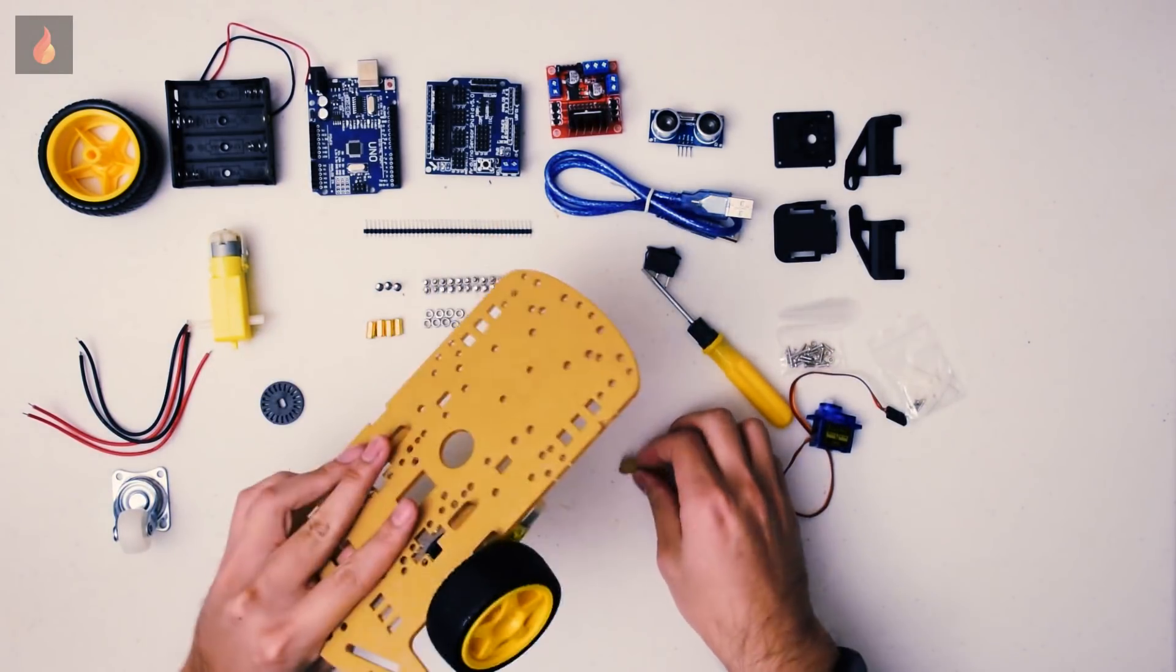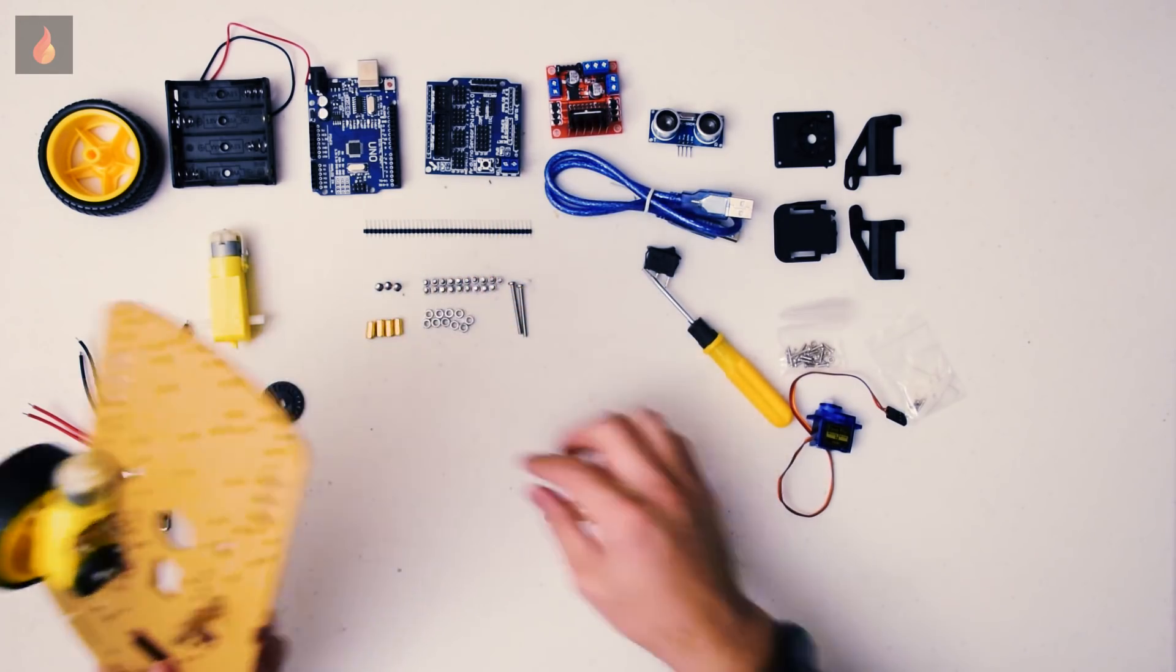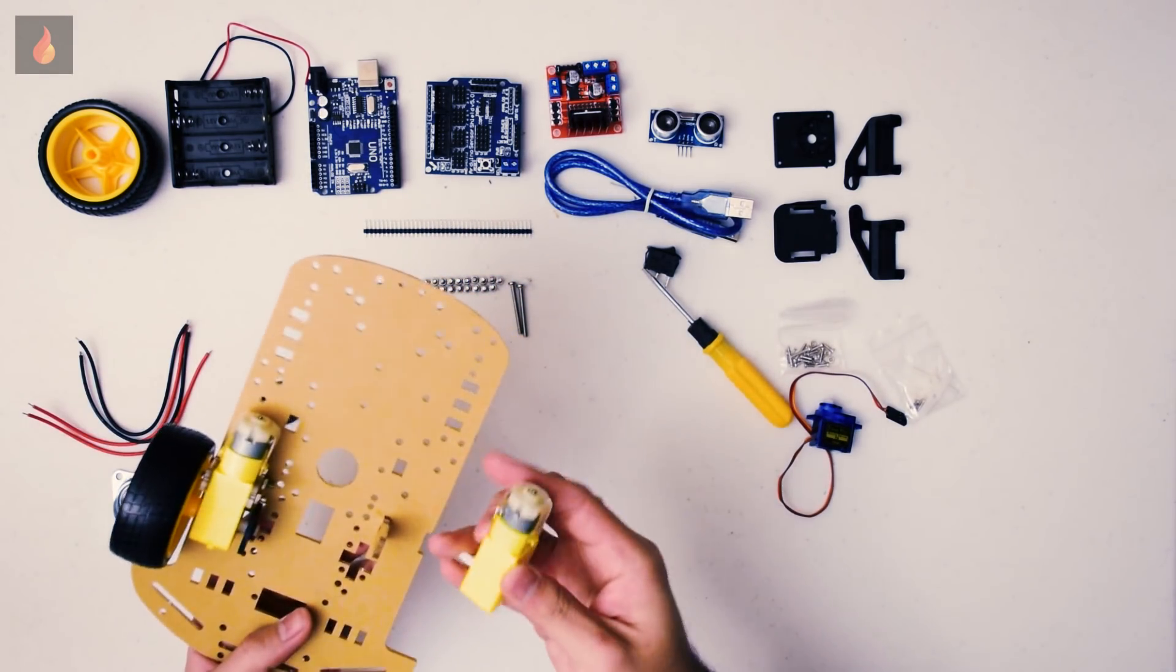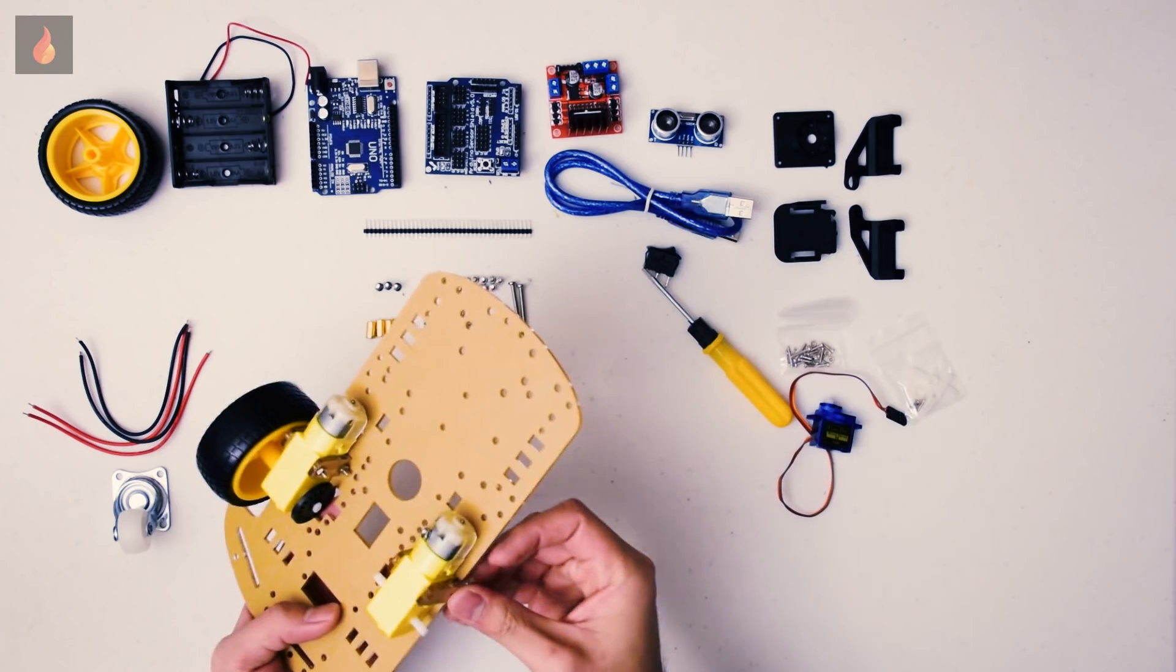So this will be the bottom, so the car will sit like that. Make sure the yellow dot is on the other side.